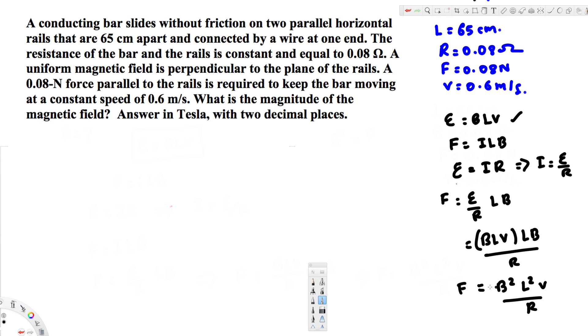From this one we can derive the equation for B. We have to write this in terms of B. If you rearrange this equation, it's going to be B squared equals F times R divided by L squared V. Since we're trying to find B, let's take the square root of both sides. If I take the square root, this becomes the square root of FR divided by L squared V.